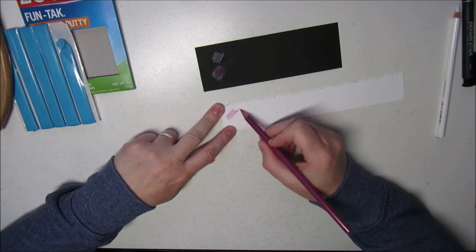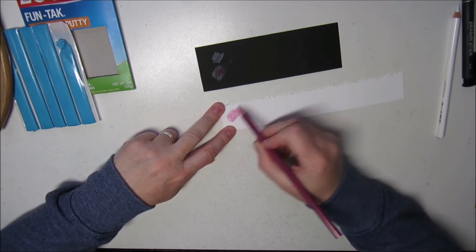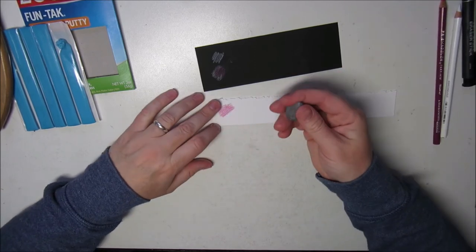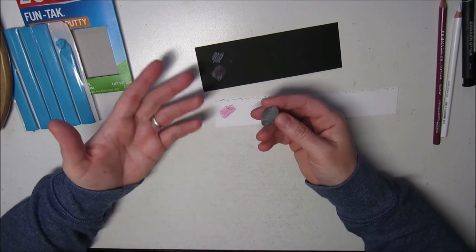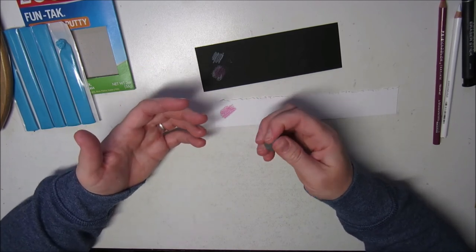So on white paper, it works the same. You can erase it just as well. And the good thing with this, just like the kneaded eraser, is that you can shape it.